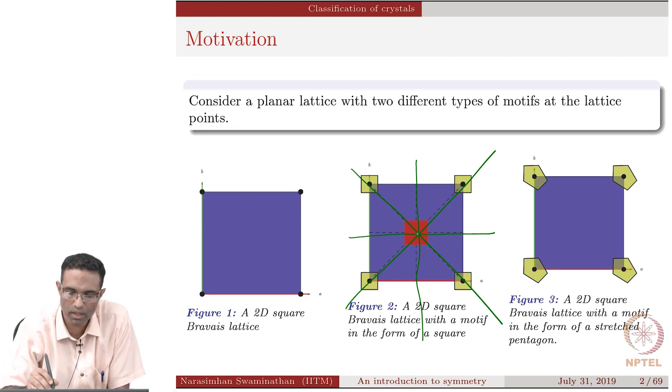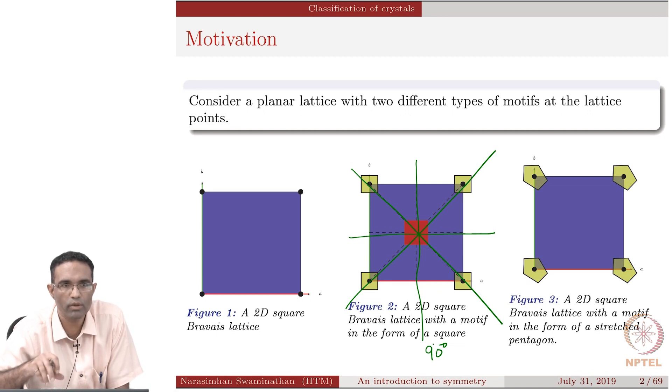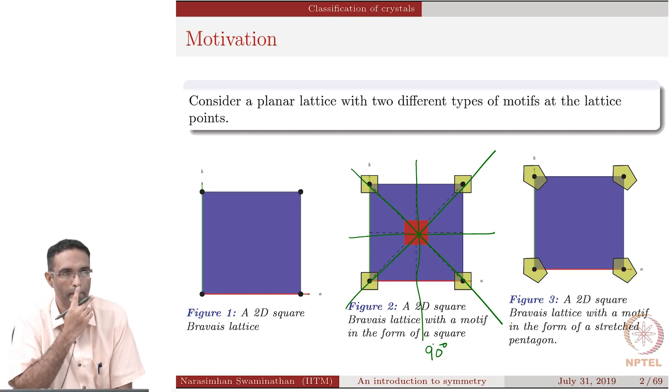Then there also appears to be a fourfold, I should not use the word fourfold. There also appears to be a, if you rotate it by 90 degrees, the object coincides with itself. You can do it four times and you will get exactly the same lattice or same 2D crystal, correct?